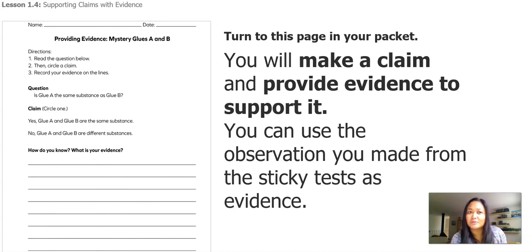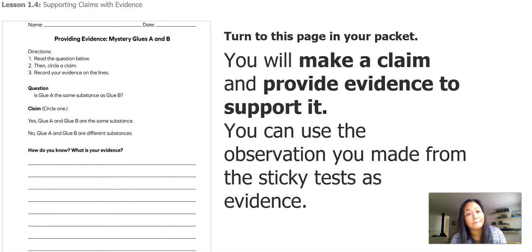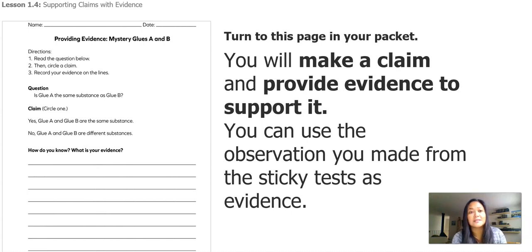Let's go over this worksheet. It says: read the question below, then circle a claim, then record your evidence on the lines. The question reads: is glue A the same substance as glue B? You can circle one of these claims: yes, glue A and B are the same substance, or no, glue A and glue B are different substances. The last part asks: how do you know — what is your evidence? Let me give you some time to think about the question, circle your claim, and write your evidence.